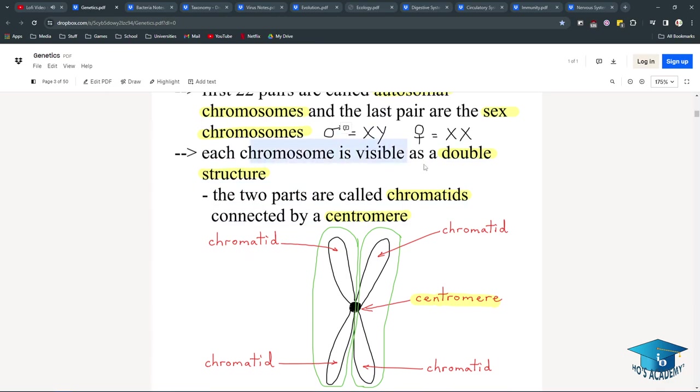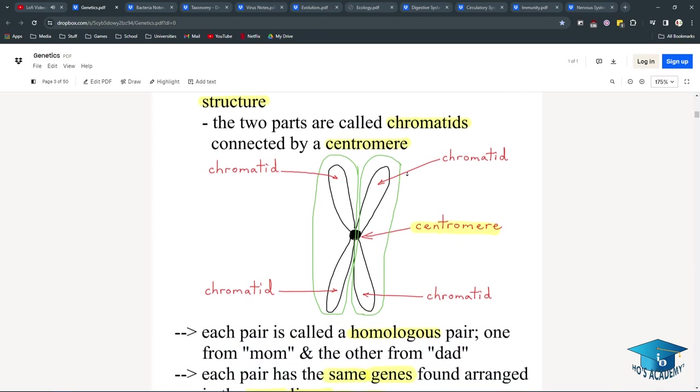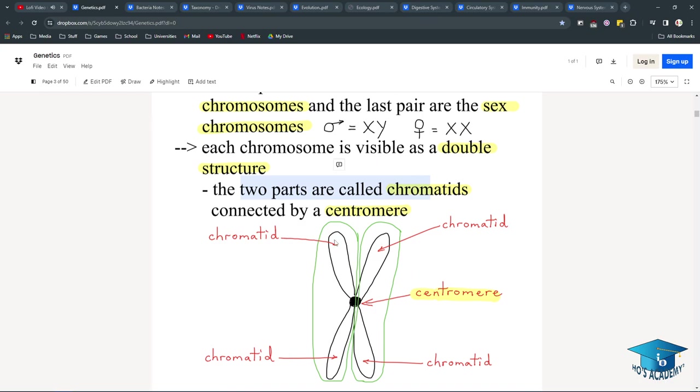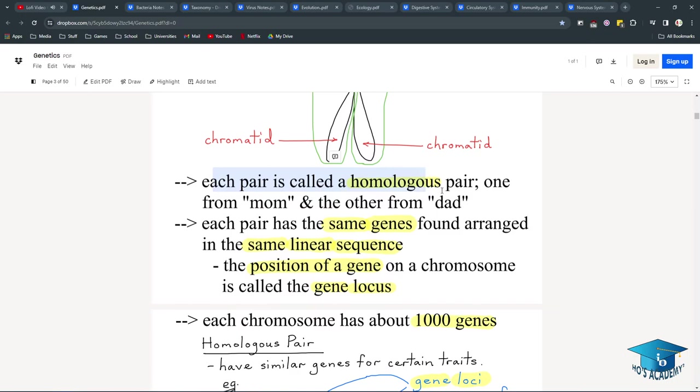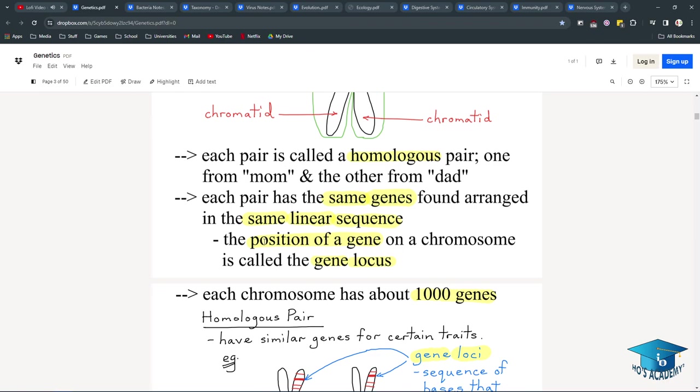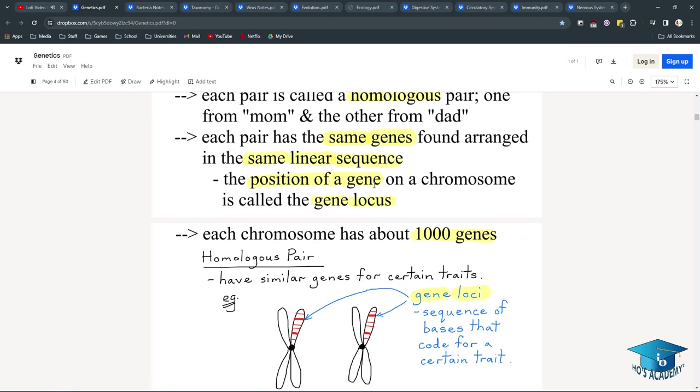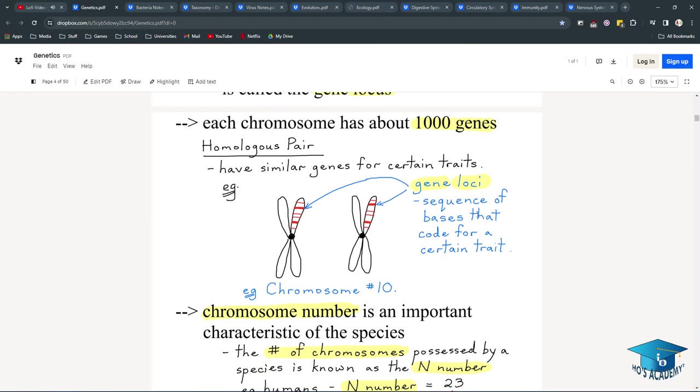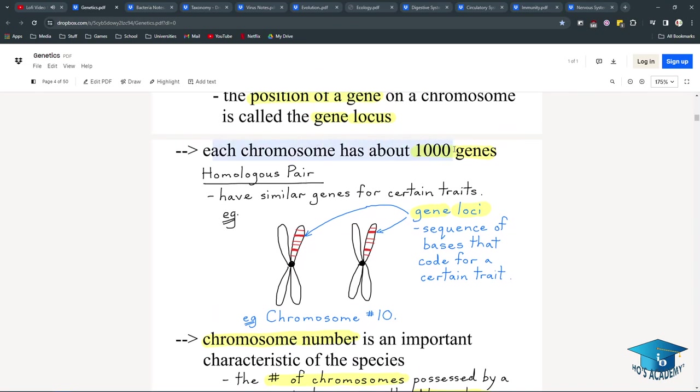Each chromosome is visible as a double structure. The two parts are called chromatids connected by a centromere. So this is two chromatids, or well, four chromatids, and then linked together by centromeres. Each pair is called a homologous pair, one from mom and one from dad, and they should align with each other for the same traits. Each pair has the same genes arranged in the same linear sequence. The position of a gene within the chromosome itself is called a gene locus, or loci for multiple. Each chromosome has approximately 1,000 genes.